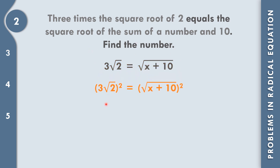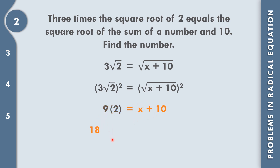Let us square both sides. If we square both sides: 3 times 3 is equal to 9. Square root of 2 times the square root of 2 is the square root of 4, and the square root of 4 is positive 2. Cancel the 2 and the radical sign, that becomes x plus 10. So 9 times 2, the answer is 18. Then positive 10 changes sign going to the left side, so 18 minus 10, the answer is 8. So x equals 8.